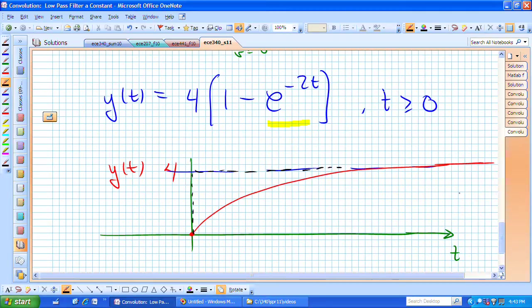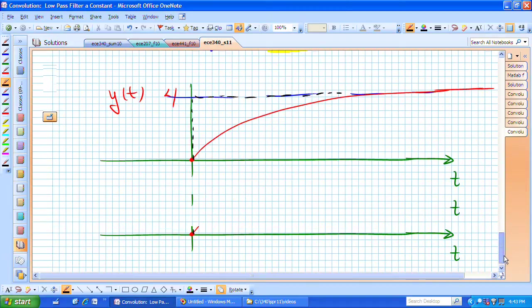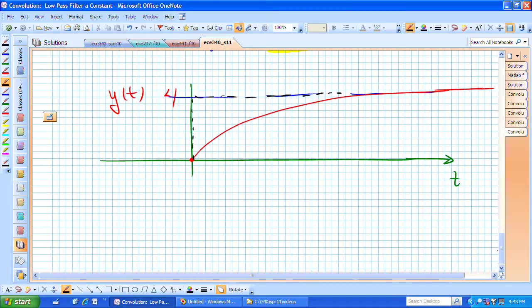We've now cut out the high frequencies by our low-pass filter, and we now build up in time to this constant value of 4.